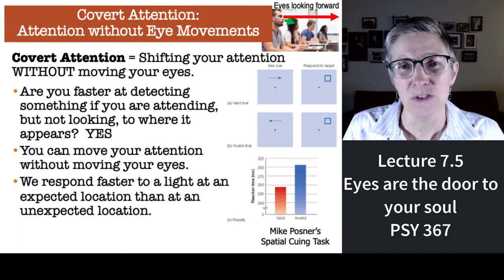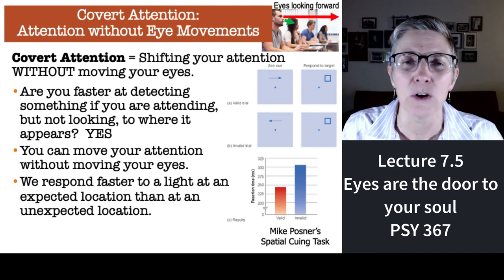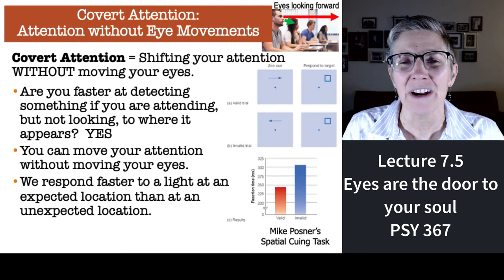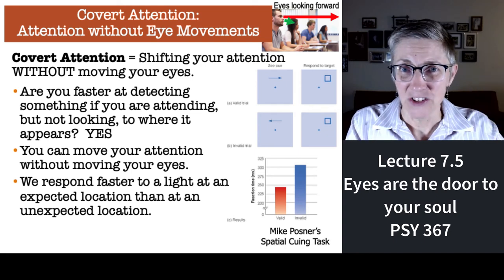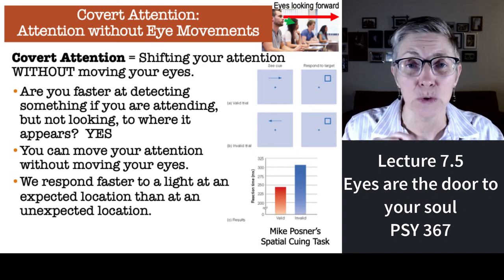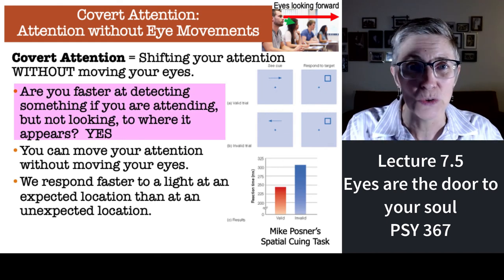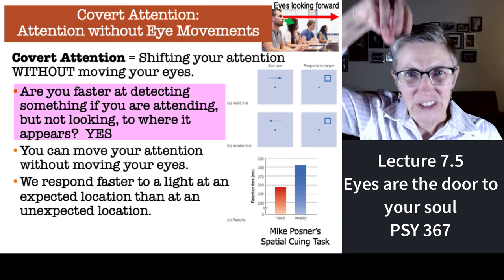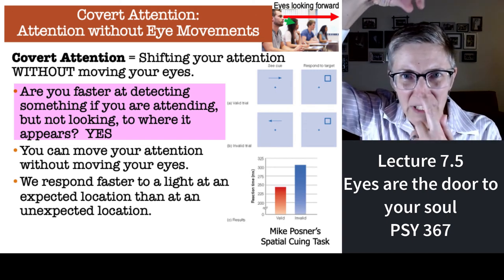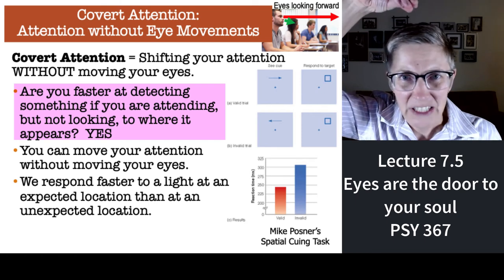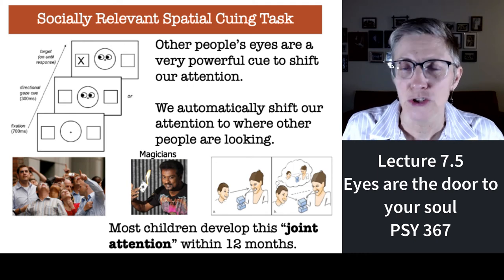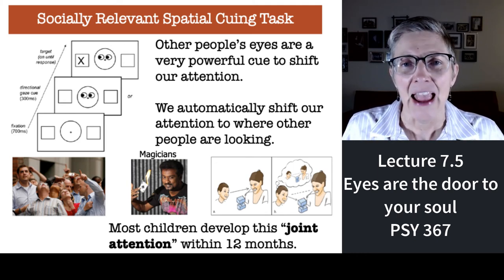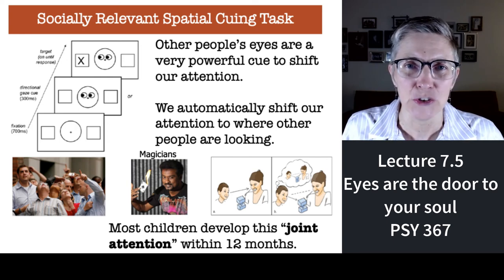There have been a number of studies using a spatial cueing paradigm where people look in one place but move their attention to a different place — for example, look at my nose, but pay attention to something up here. You can absolutely do it. We are social animals and pay a lot of attention to where other people are looking. If we see a lot of people looking in a particular direction, we stop and look in that direction too.